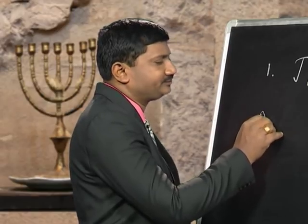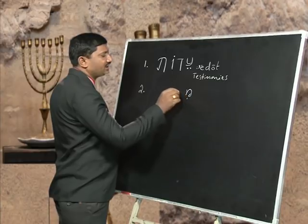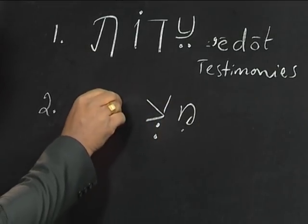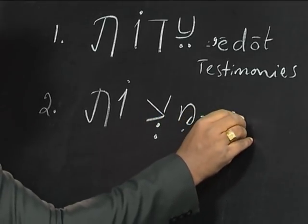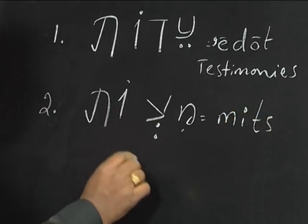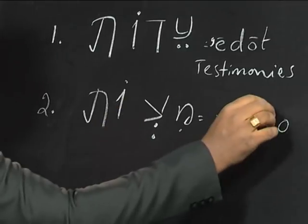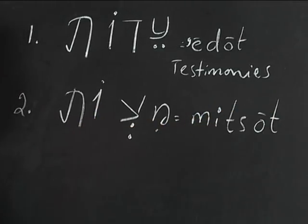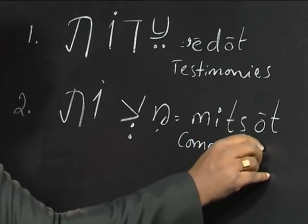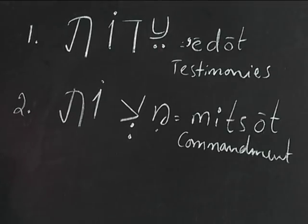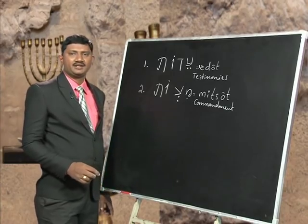And the second word that we have learned is Mitzvot — Mem, Hirek, Tsade, Silent Shva, Vav, Holem Vav, and Tav. So Mitzvot, which means commandment — the commandments that we have seen. There are 620 commandments for the people of Israel, and under those, 613 commandments are given by the Lord Yahweh. That is what we have seen.